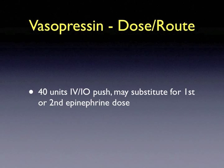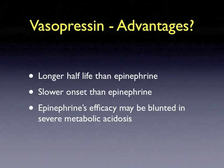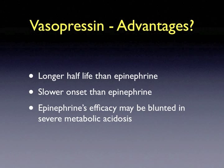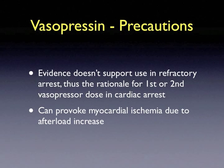The dose and route of vasopressin administration in a cardiac arrest setting is a 40-unit intravenous or intraosseous push. It is recommended, if you use vasopressin, to substitute it for either your first or second epinephrine dose. There may be advantages to using vasopressin instead of epinephrine for your pressor dose. Vasopressin has a longer half-life and a slower onset than epinephrine, and epinephrine's efficacy may be blunted in severe metabolic acidosis.